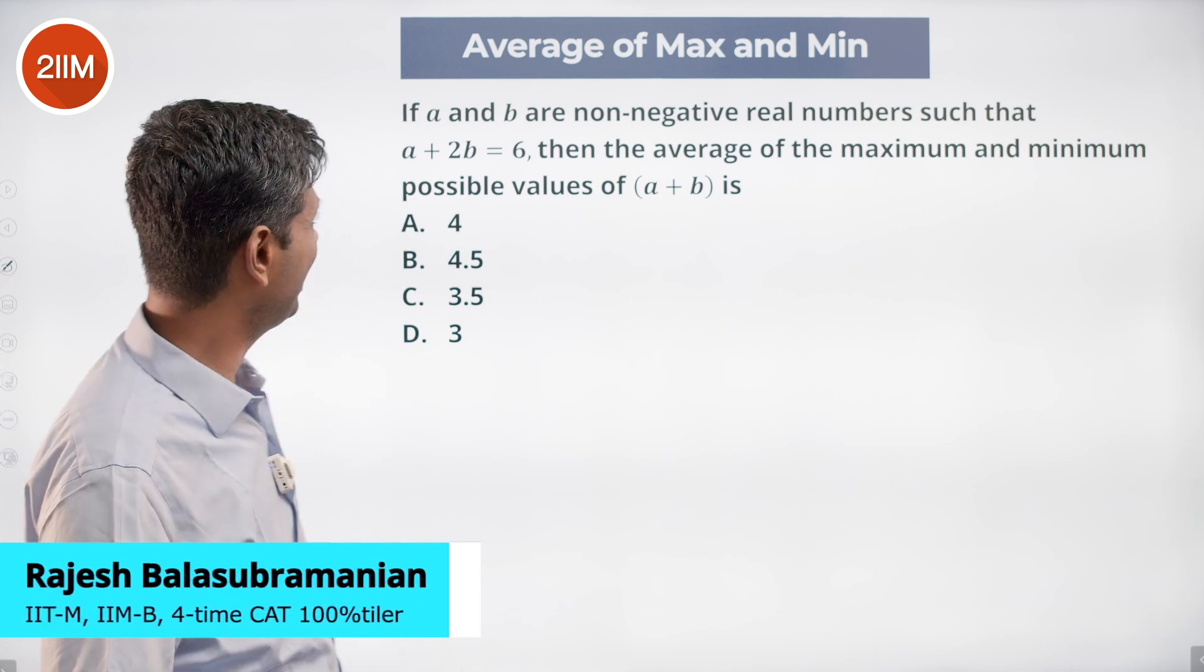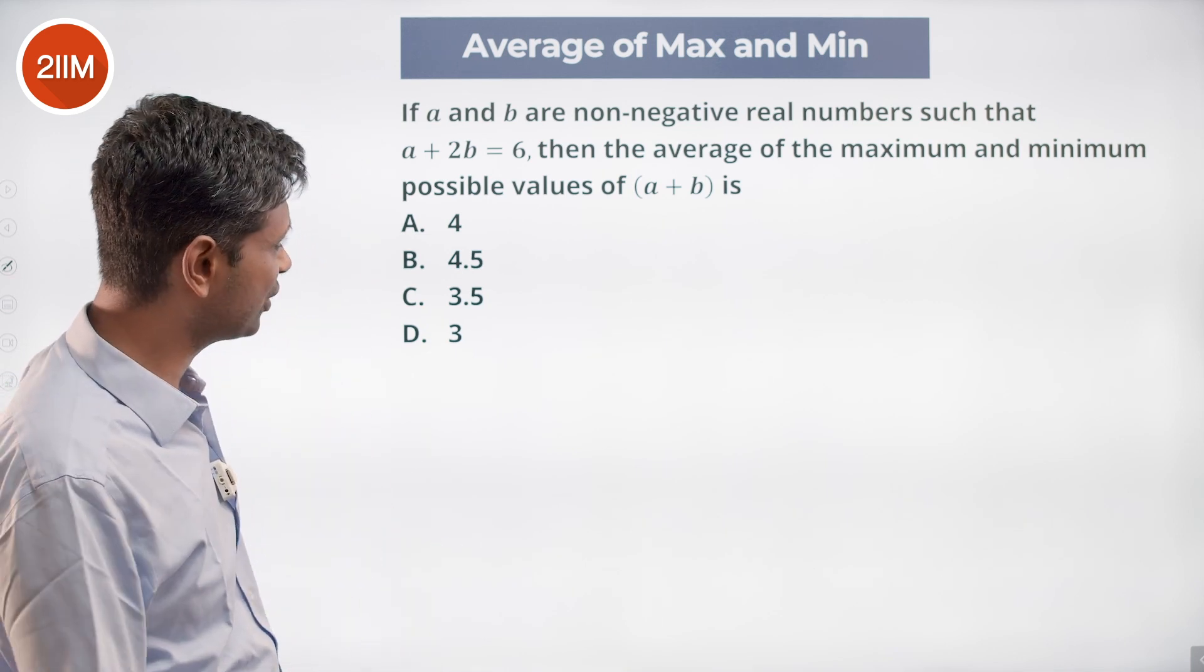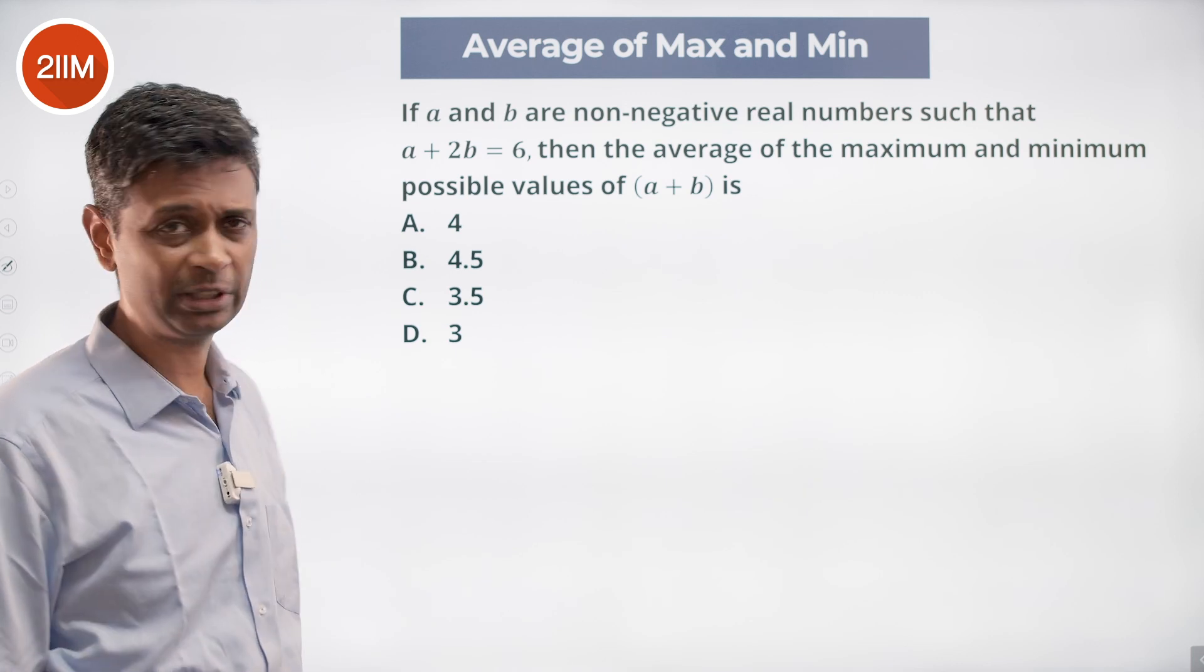A beautiful question. If a and b are non-negative real numbers such that a plus 2b is 6, then the average of the maximum and minimum possible values of a plus b is.